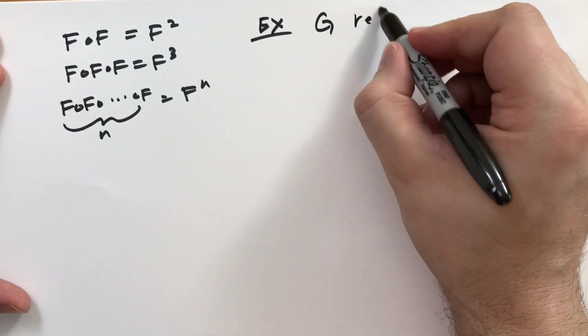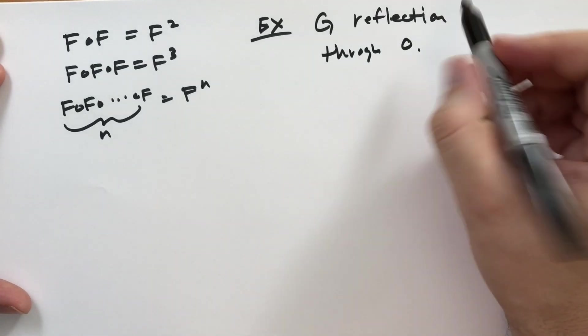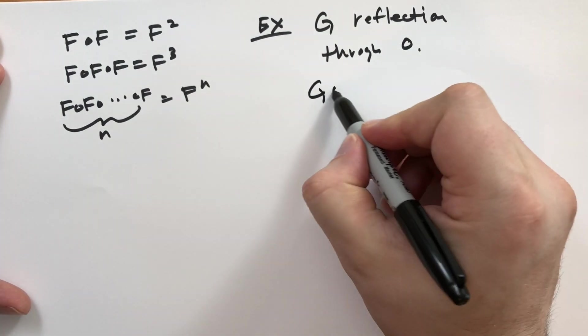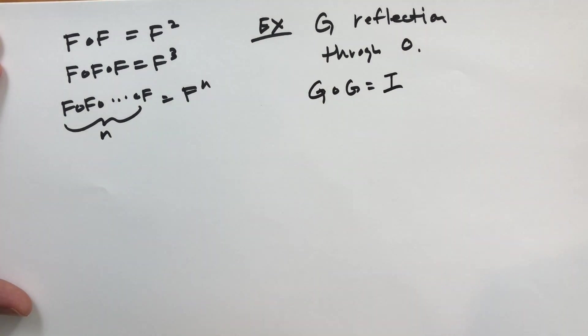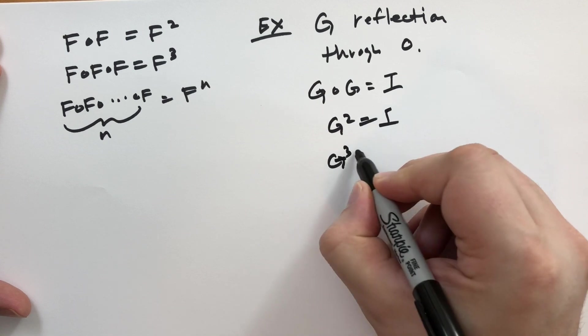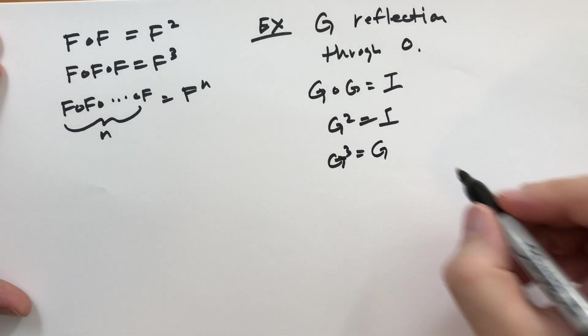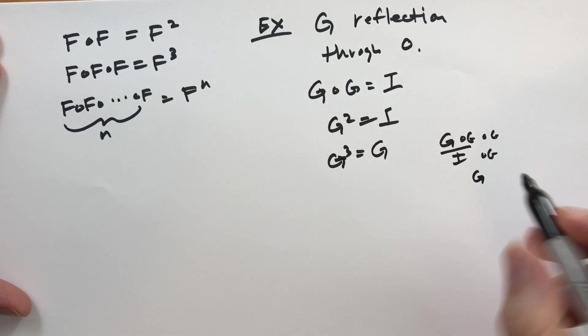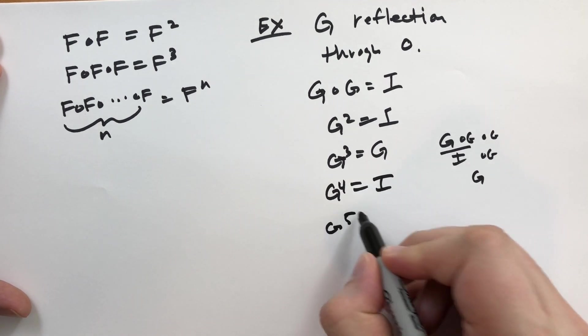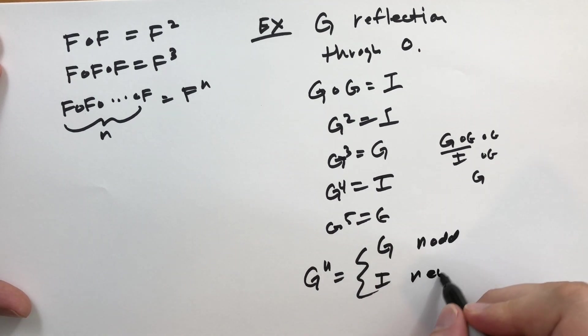Let's take an example. Let G be the reflection through the given point O. Then we see that if we take G and apply it to itself, what does that do? Well, we're reflecting twice. So once it moves through O and then it moves back. And so this basically does nothing. So G squared is equal to I. G cubed, that's going to be G times G times G or G of G of G. So the G of G is the identity and identity of G is just G. Let me write that out for you. So G of G of G, this part becomes I of G. I of G is just G because when you apply the identity, nothing happens. G to the fourth is the identity again. G to the fifth is G. And in fact, you'll see that G to the N is either G or I—G when N is odd and I when N is even.